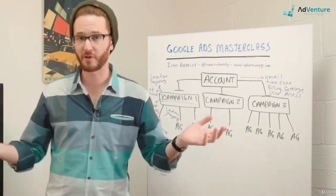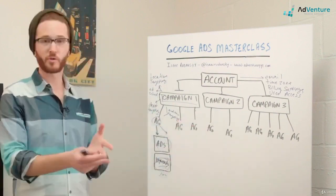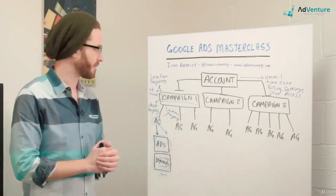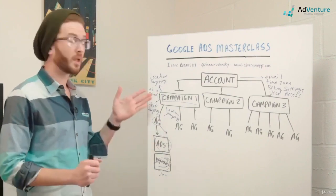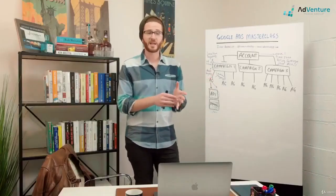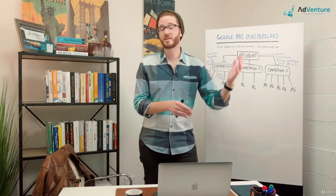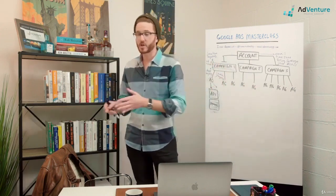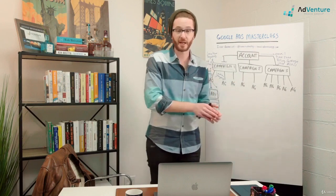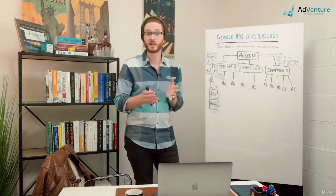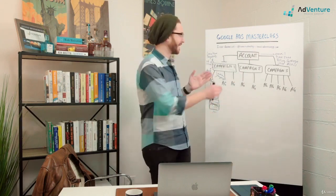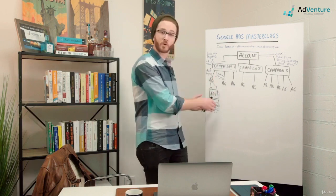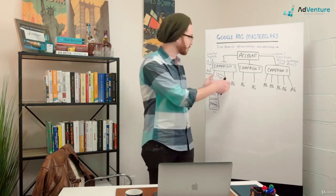Say we were dealing with a sofa company or an online furniture company. We'll go through an example and a specific case study of an online furniture company. You might want to separate out the campaigns by product type. You might have a campaign for sectionals, you might have a search campaign for sofas, a search campaign for recliners. Now technically that could all be done inside one campaign. I could have one campaign and I could have an ad group for sofas and an ad group for sectionals and an ad group for recliners.